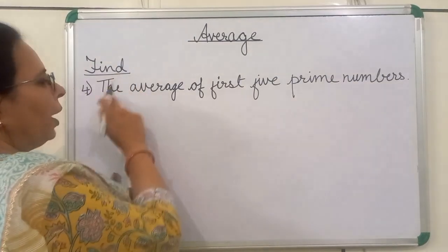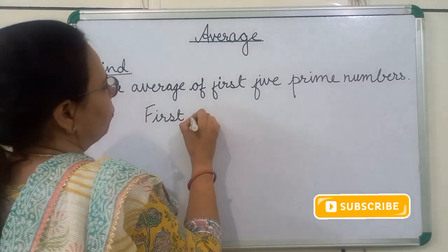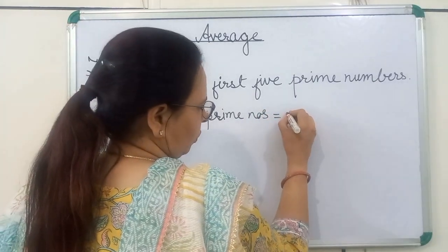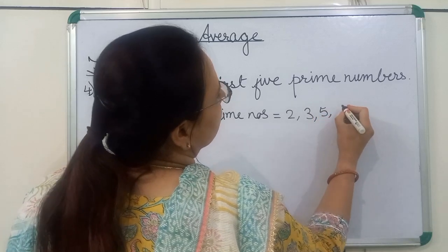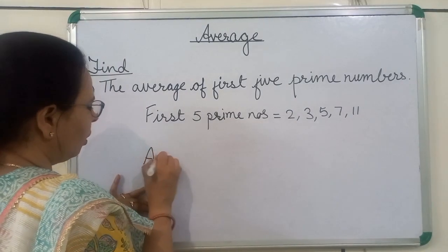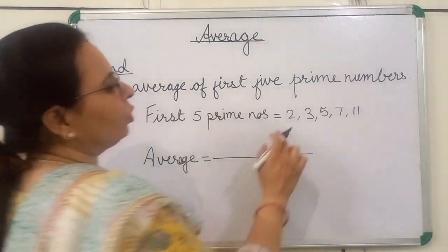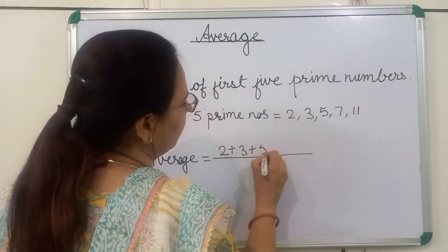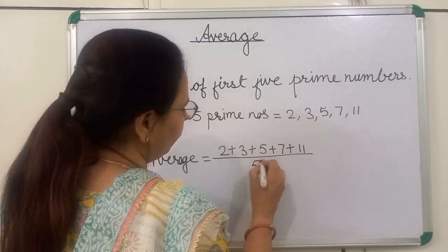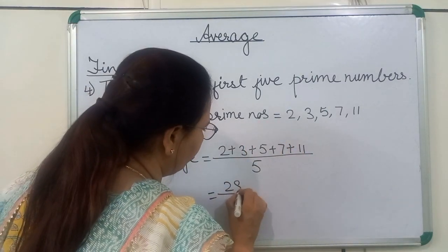Another question is: find the average of first 5 prime numbers. The first 5 prime numbers are 2, 3, 5, 7, and 11. Now, we will find the average of these prime numbers. Average is equal to sum of numbers upon sum of addends. How many addends are here? 5. We will add: 2 + 3 + 5 + 7 + 11, giving us 28 upon 5.